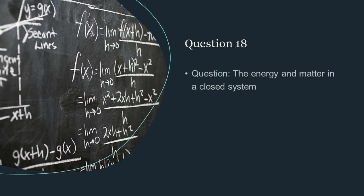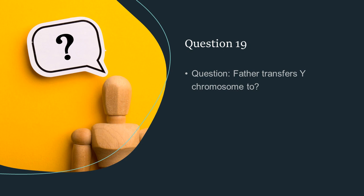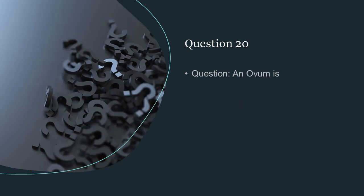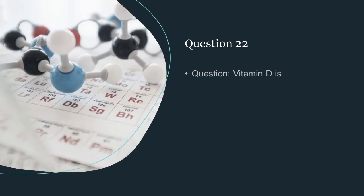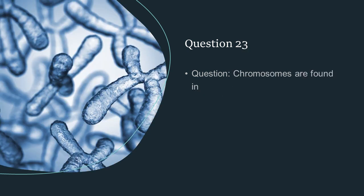The energy and matter in a closed system are conserved. Father transfers Y-chromosome to son. An ovum is haploid. Prokaryotic cells contain ribosome. Vitamin D is fat-soluble. Chromosomes are found in nucleoplasm.